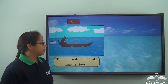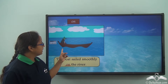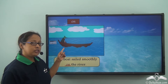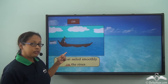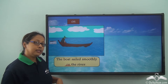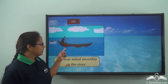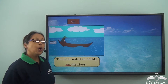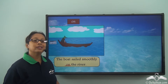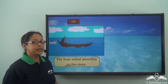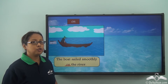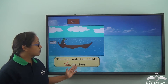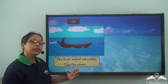Let's take a look at the picture. You can see this is the boat and this is the river. Now where is the boat? It's not inside the river, but you can see that the boat is on the surface of the river. So when we have to talk about things or somebody being on the surface, we use the preposition 'on'. So the boat sailed smoothly on the river.